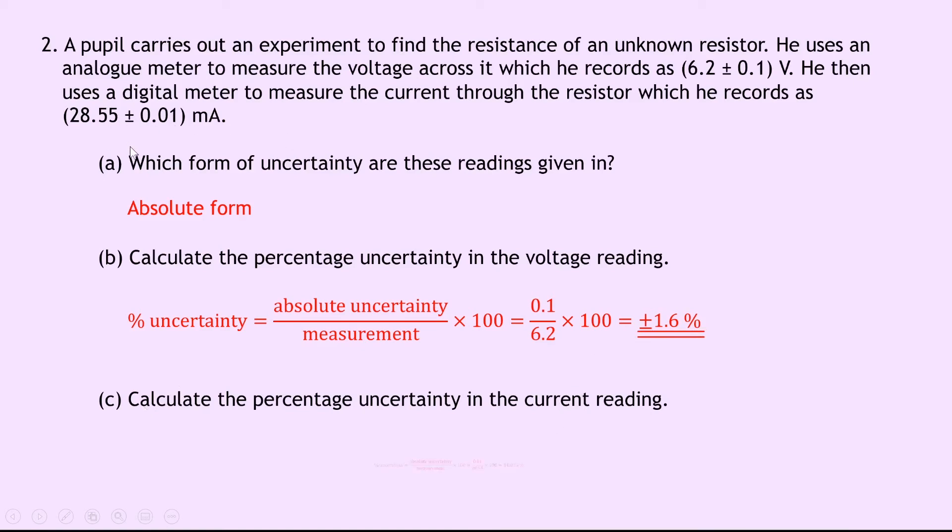Part C says to calculate the percentage uncertainty in the current reading. So we're looking over here this time. And same again, percentage uncertainty is the absolute uncertainty over the measurement times 100 gives us 0.01 divided by 28.55. Remember the milliamps don't matter here because they will cancel out in this division times 100 gives us plus or minus 0.035%.